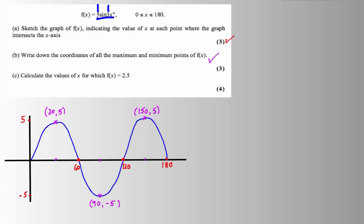And finally, I've got to solve an equation now. I need f(x), 5 sine of 3x, I need that to equal 2.5. Let me divide both sides by 5. 2.5 divided by 5 is a half. Sine of 3x equals a half.